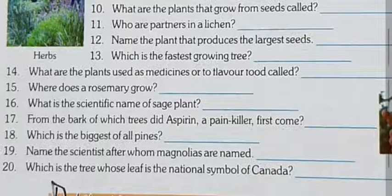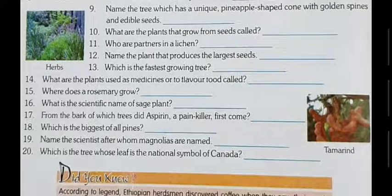Question fifteen: where does rosemary grow? Rosemary grows in coastal areas — that is, areas near the ocean or sea. Question sixteen: what is the scientific name of the sage plant? The scientific name is Salvia — S-A-L-V-I-A.